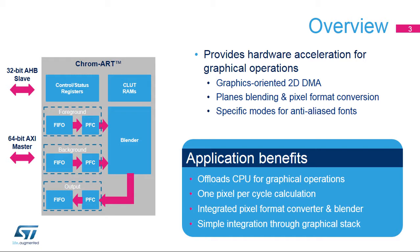It also provides specific modes for managing anti-aliased fonts. The Chrom-ART Accelerator will offload the CPU for most of the graphical operations with a 1-pixel-per-cycle throughput, integrated pixel format conversion, and blending. It is fully integrated in graphical stacks, making its software integration transparent to the user.